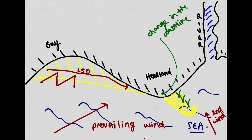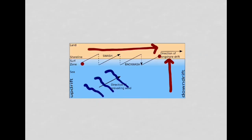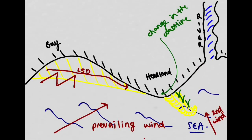So I hope that's helped — that's how a spit forms. Remember your case study is Spurn Point on the Holderness Coast in the UK. Make sure you get an understanding of how longshore drift works and apply it to this example, and you should be absolutely fine explaining how a spit forms.